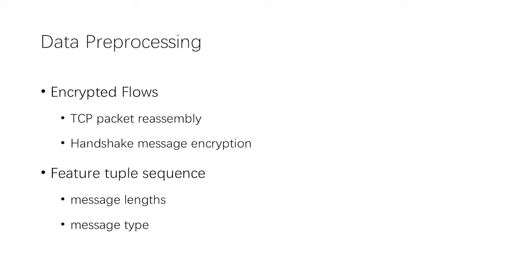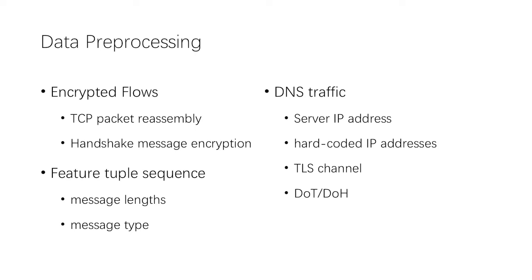For each TLS 1.3 flow, we extract the message length and visible message types of all messages to form a feature tuple sequence. Mobile applications find the optimal server by querying the recursive DNS server, and we can identify related DNS traffic by comparing DNS answer records with the server IP address of the flow. However, we cannot get DNS traffic when the application connects via hard-coded IP addresses, obtains server IPs through an existing TLS session, or when the client adopts DoT or DoH.